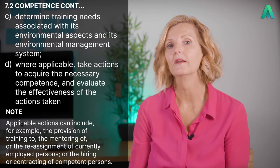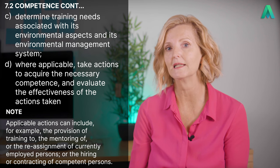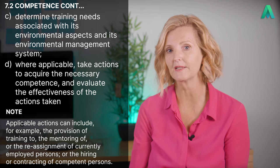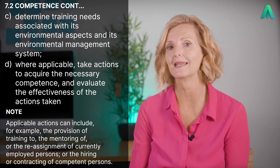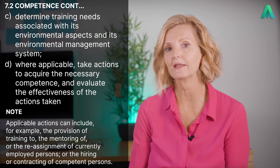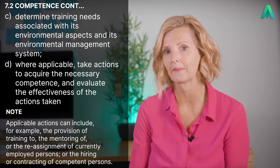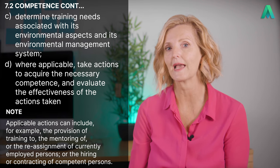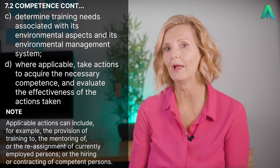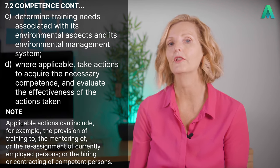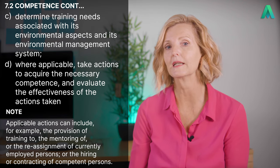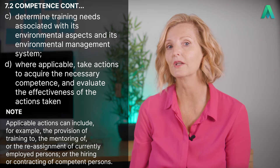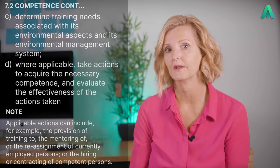Then C states that the organisation shall determine training needs associated with its environmental aspects and its environmental management system. And D, where applicable, take actions to acquire the necessary competence and evaluate the effectiveness of the actions taken. The note at the end of this clause states that applicable actions can include, for example, the provision of training to, the mentoring of, or the reassignment of currently employed persons, or the hiring or contracting of competent persons.